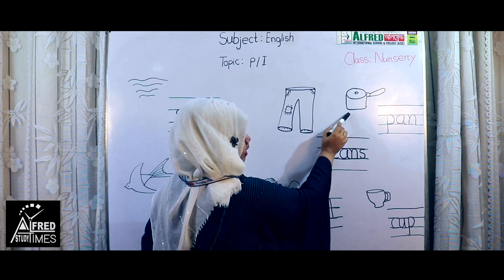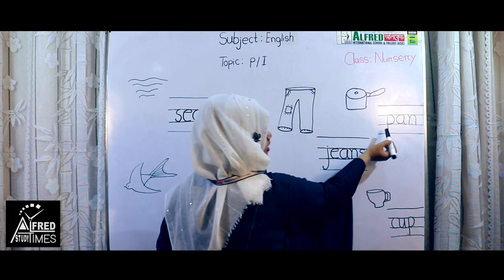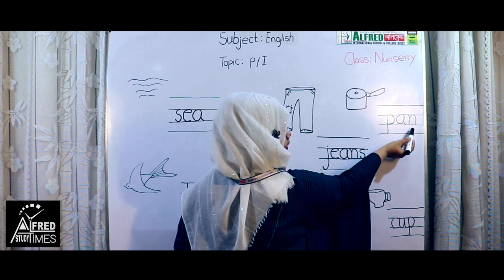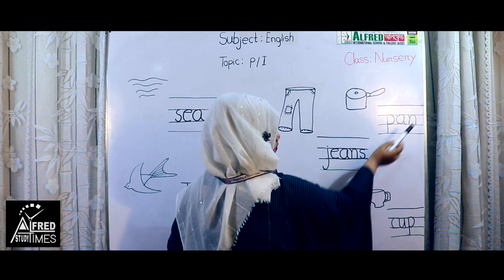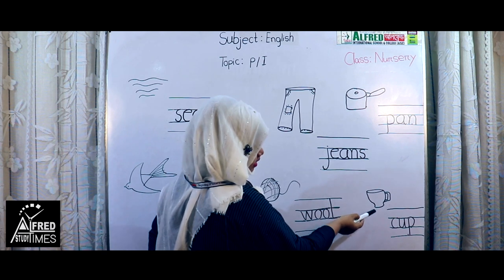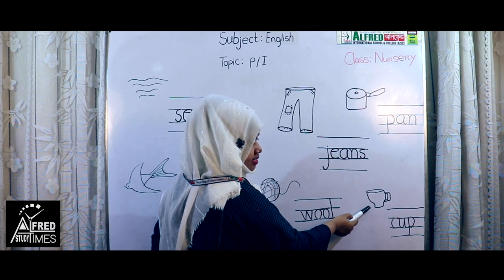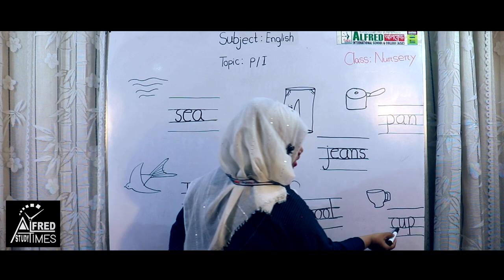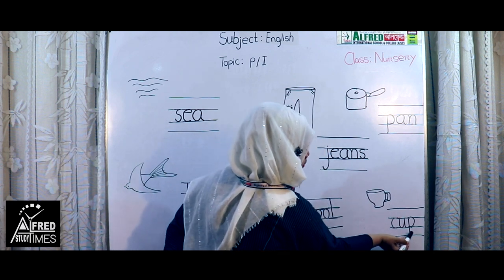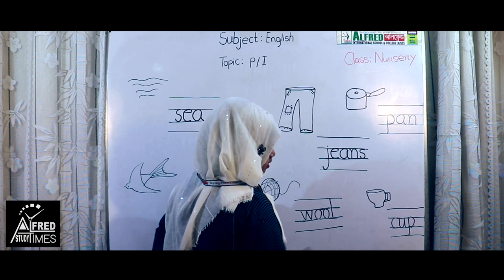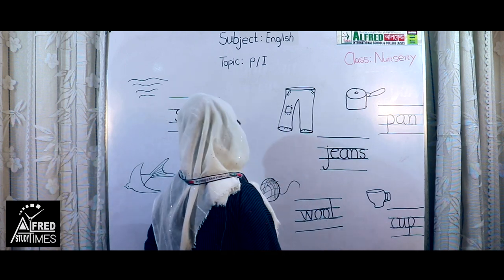This picture name is pan. Pan is spelling T-A-N, pan. T-A-N, pan. Next, cup. This picture name is cup. C-U-P. Cup. C-U-P. Cup. C-U-P. Cup.